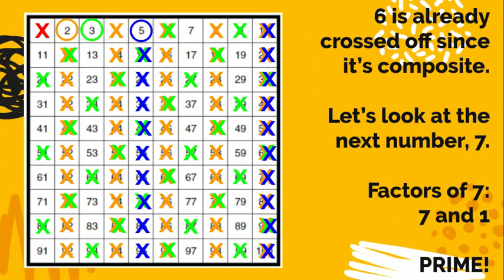Moving on to the next number, 6. It's already crossed off since it's composite. Actually, it's crossed off twice because it was a multiple of 2 and a multiple of 3. So let's skip ahead. Look at the next number, 7. Think about the factors of 7. Just 1 times 7 equals 7. So that's two factors. That makes 7 prime.